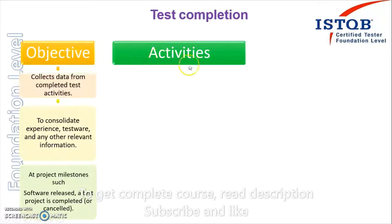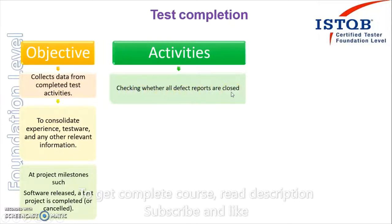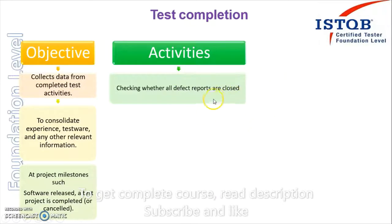To achieve these objectives there are certain activities. Let's start with the first activity: checking whether all defect reports are closed. In test execution we find out that there are some problems or anomalies in the software, and we have to check whether all those anomalies which were reported are closed or not. That is one of the activities of test completion.